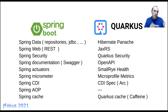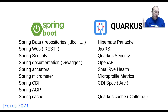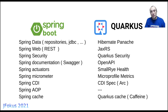I chose a Spring Boot application called Pet Clinic Rest, which uses Spring Data, Web, Security, Documentation, Actuators, Micrometer, CDI, Aspect-Oriented, and Cache — more or less the things found in most Spring applications. The corresponding Quarkus libraries are: Hibernate Panache, JAX-RS, Quarkus Security with OpenAPI, SmallRye Health, MicroProfile Metrics, CDI, and Quarkus Cache using Caffeine. There's no Aspect-Oriented in Quarkus because most work is done at build time rather than runtime — that's why Quarkus boots faster.